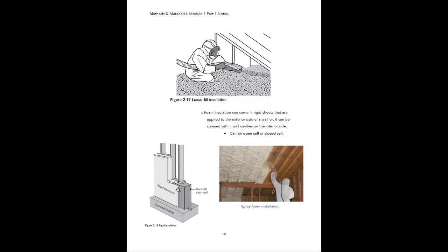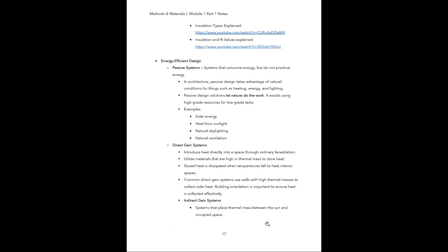Looking at the diagram, you can see rigid insulation — basically just a sheet placed up against the structure of the wall. There are also a couple of videos here: one explains the different types of insulation, and the other explains insulation and how R-values tie into the different types of insulation.